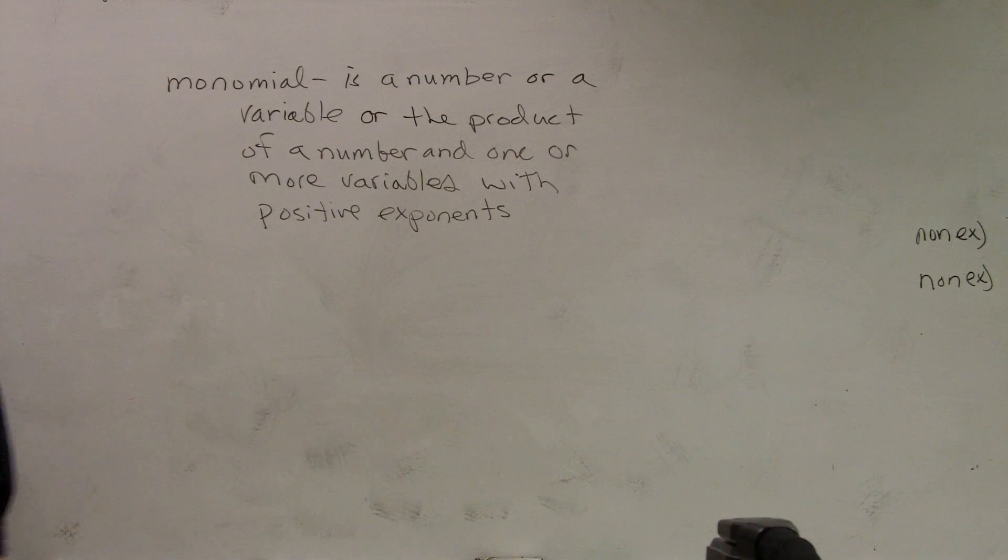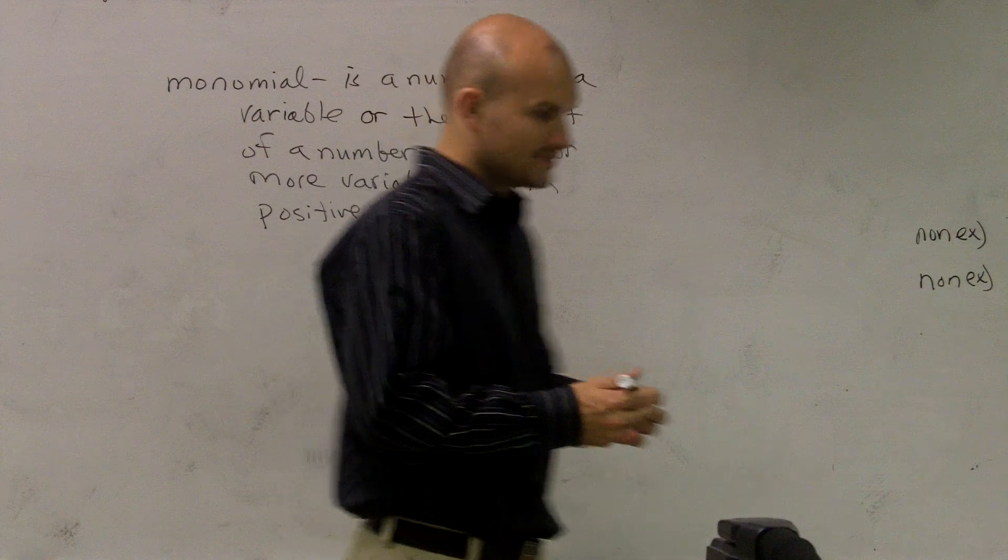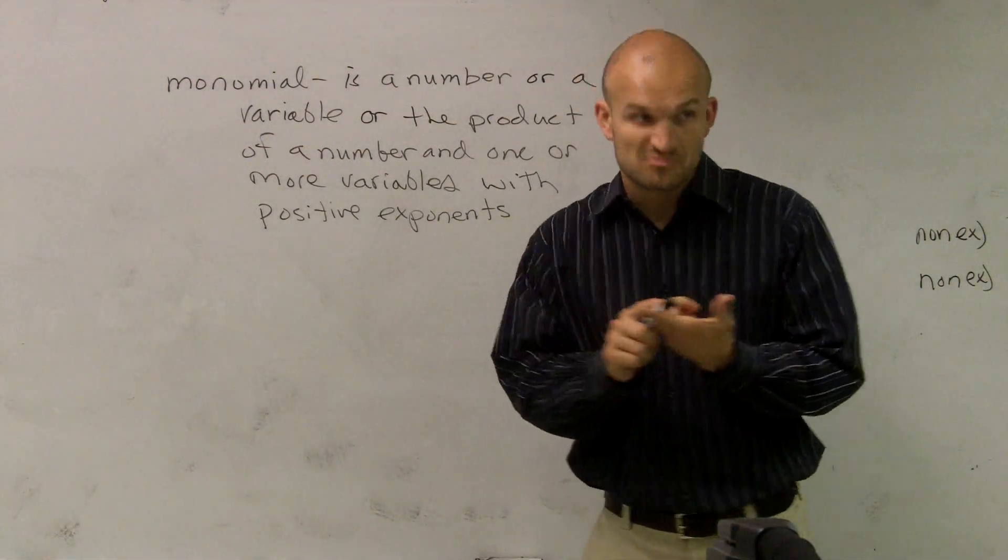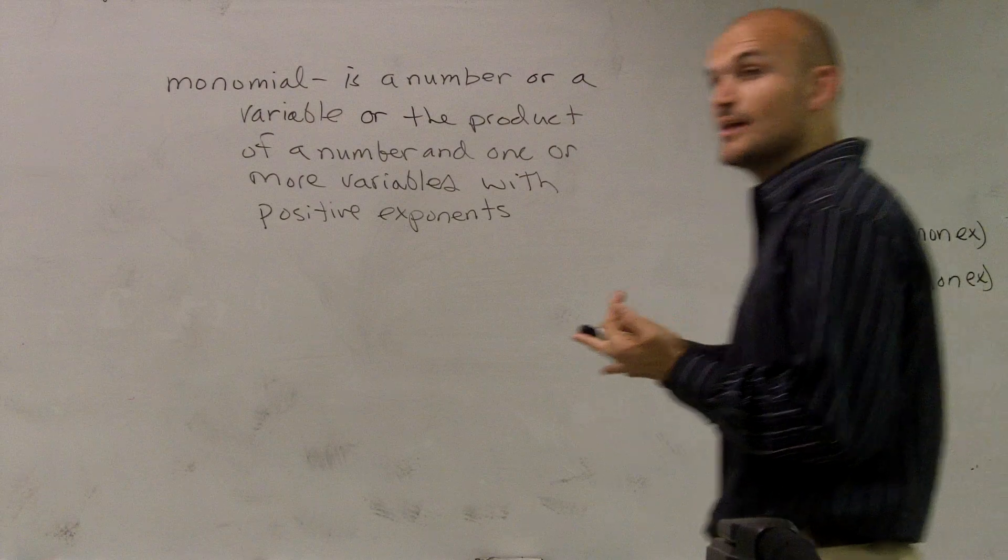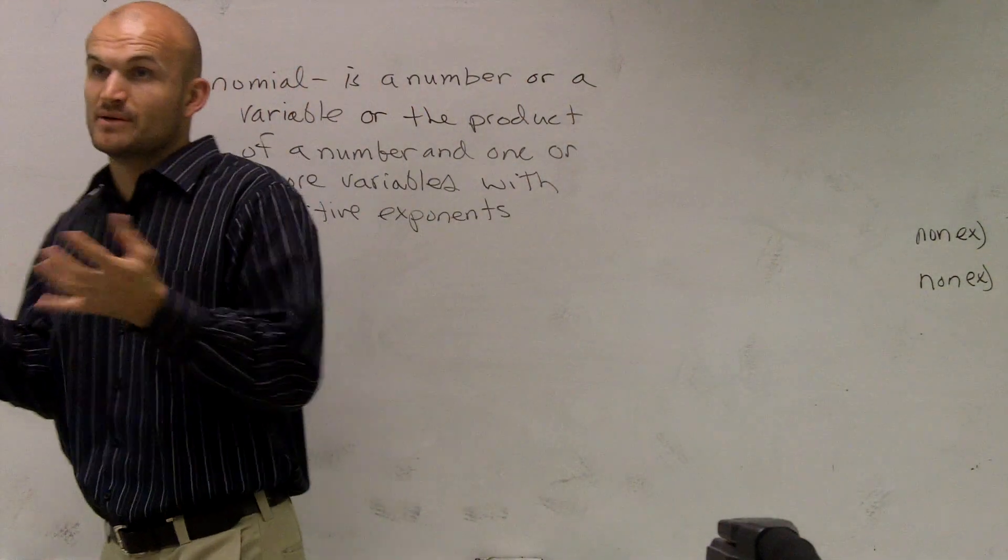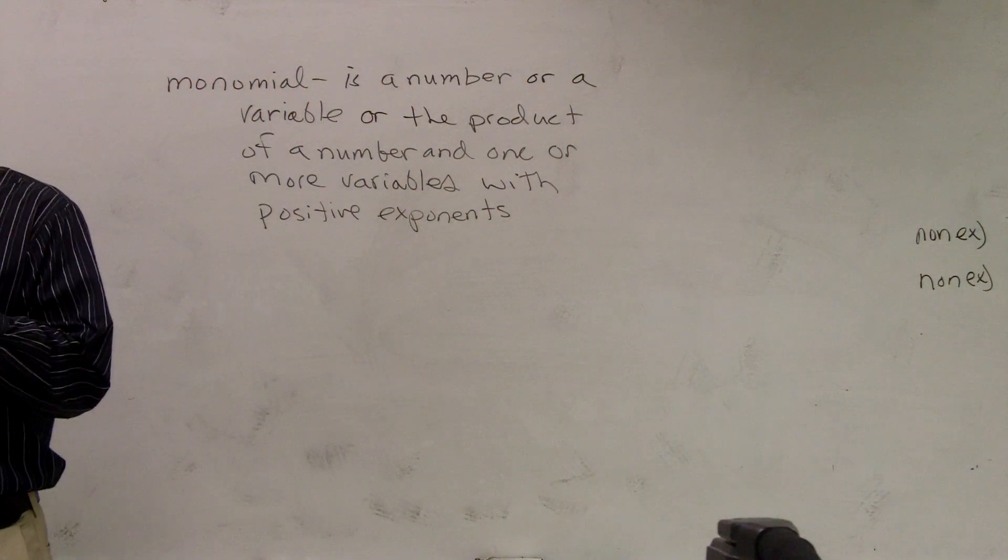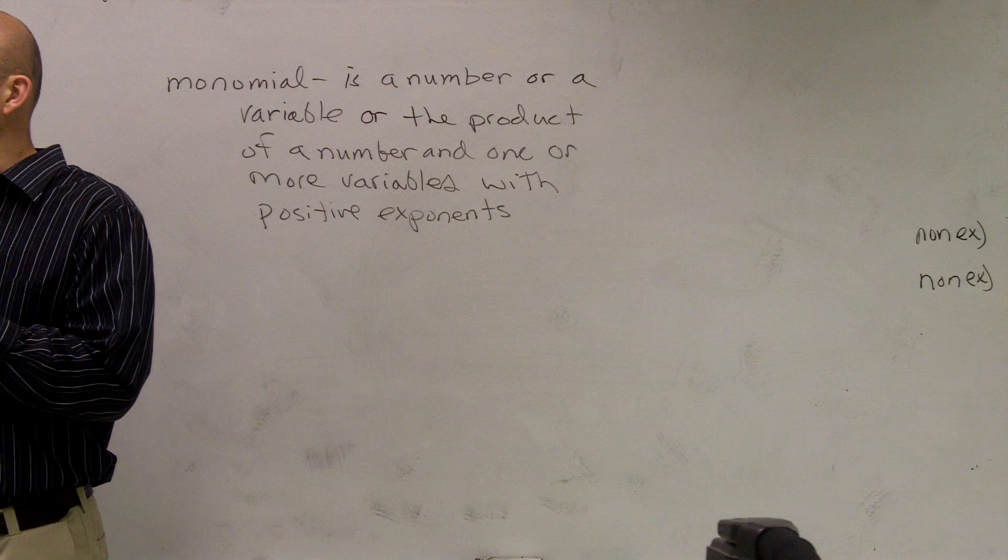So let's just kind of go through and think about that. Whenever we're talking about numbers, that's a monomial. Whenever we're talking about variables, that's going to be a monomial. Whenever we're talking about the product of them, the multiplication of them, that's going to also include us a monomial.